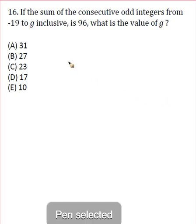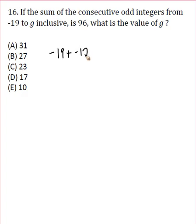A lot of students after reading this question kind of go, huh? Like what are they looking for? What they want you to do is, you're going from negative 19 and you're adding all the consecutive odd integers.